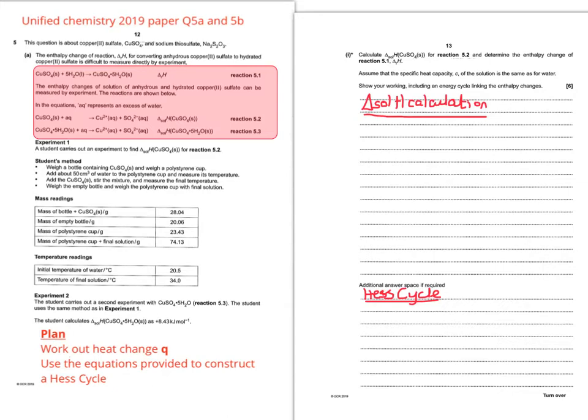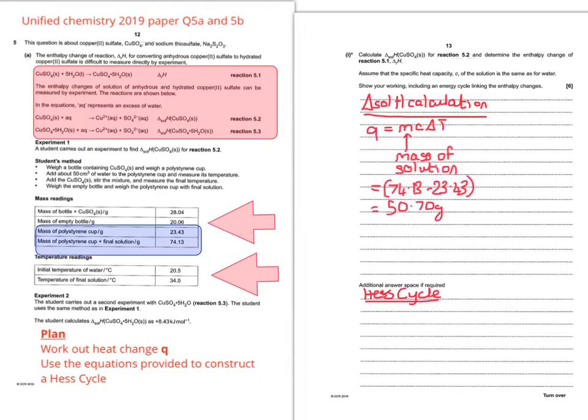So I'm going to divide up my page into two sections so I can deal with each section separately. So the first thing to do is to look at the data I'm given. So I need to do Q equals MC delta T. I need to think about what M actually is. So using the appropriate data, you can see that you've got 50.70 grams of solution. Now we need to get delta T. So by subtracting the original temperature from the final temperature, you get 13.5 degrees C. Now we can work out Q.